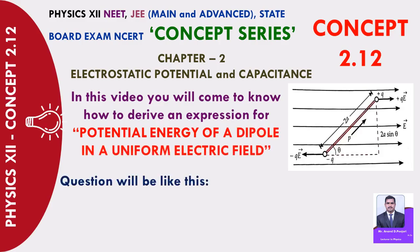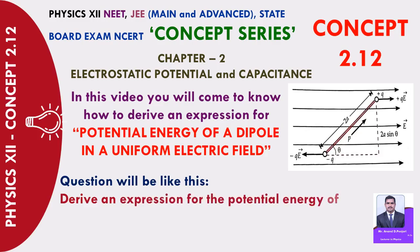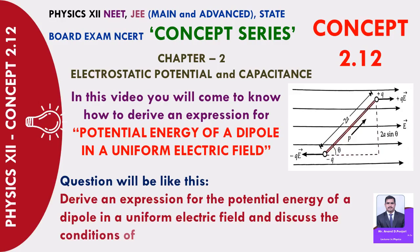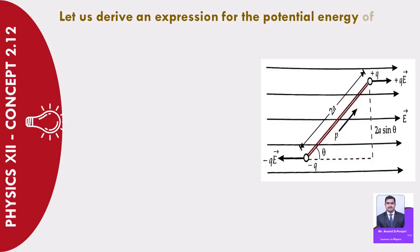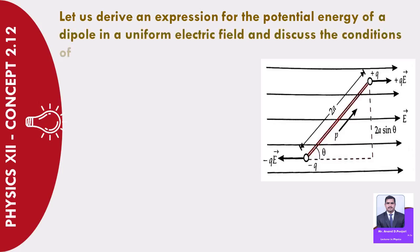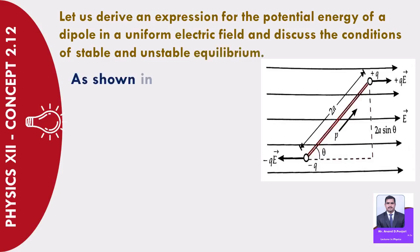The question will be like this: Derive an expression for the potential energy of a dipole in a uniform electric field and discuss the conditions of stable and unstable equilibrium. Let us derive an expression for the potential energy of a dipole in a uniform electric field and discuss the conditions of stable and unstable equilibrium.